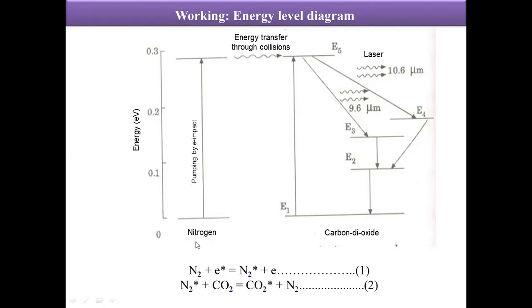Since the excited level of nitrogen is very close to the E5 level of carbon dioxide, population inversion in the E5 level is achieved. As soon as population inversion is achieved, any spontaneously emitted photon will trigger laser action in the tube. Mainly two laser lines are produced: from E5 level to E4 level giving an output of 10.6 micron, and the other one from E5 to E3 level which is 9.6 micron.